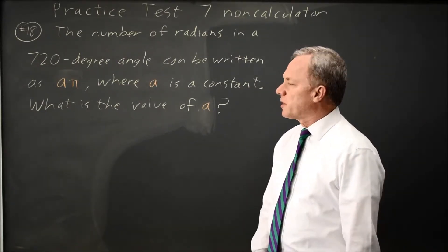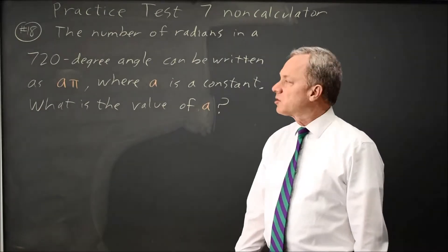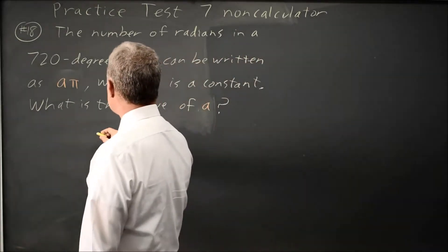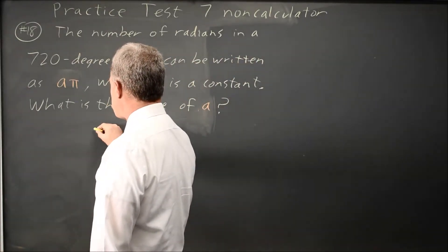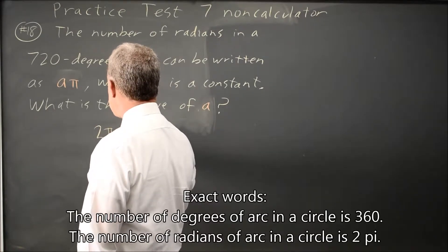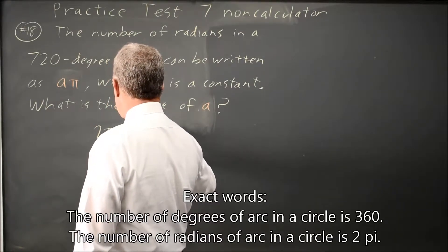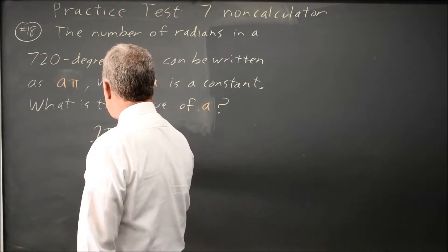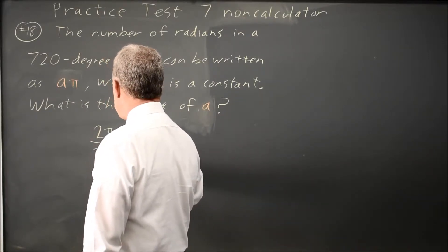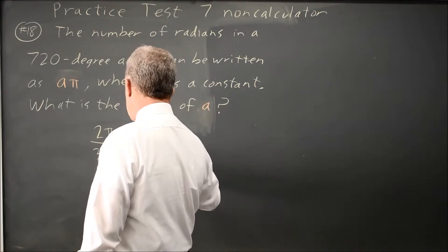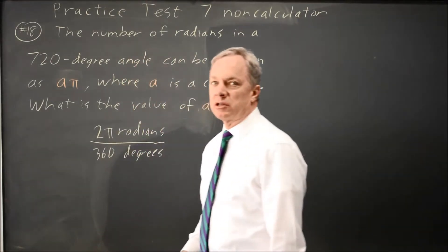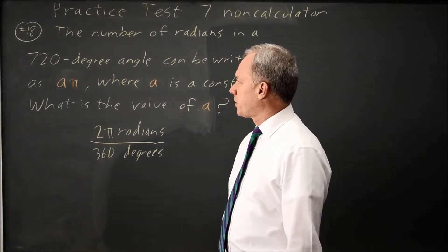The front of each math section says that there are 360 degrees in a circle, and it also says there are 2 pi radians in a circle. So 2 pi radians over 360 degrees is equal to 1. Those are two different expressions for the same angle.